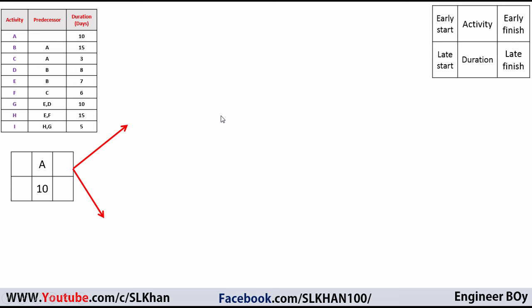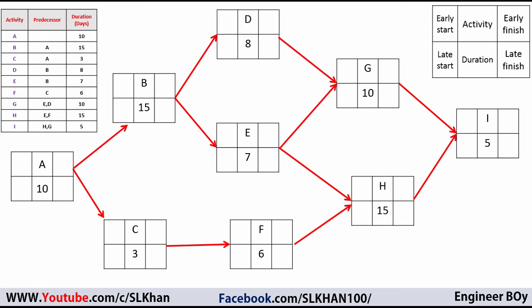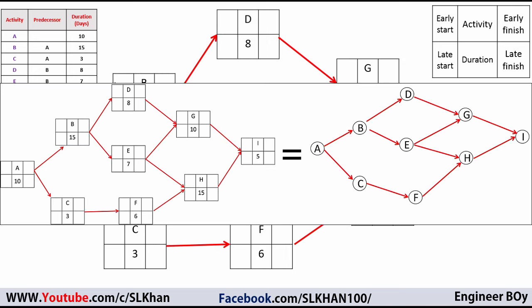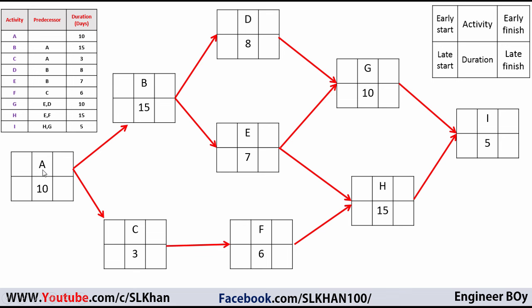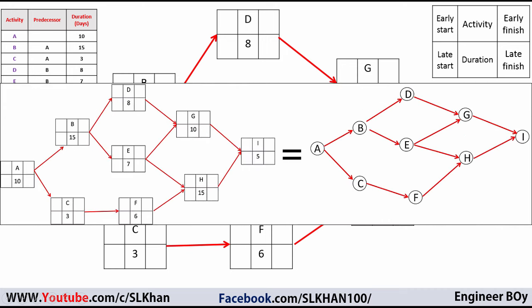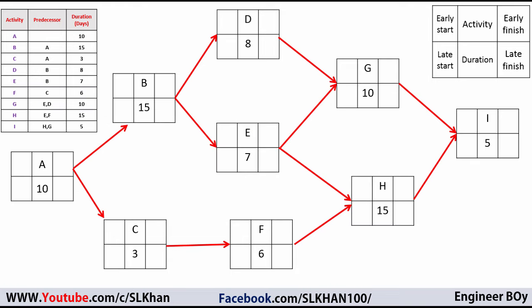We can draw the same diagram in this box format, with activity names and durations included — Activity A has a duration of 10 days, Activity B has 15 days, and so on with predecessors as before. Now we're going to calculate the early start, early finish, late start, and late finish, and then move on to determine the critical path.